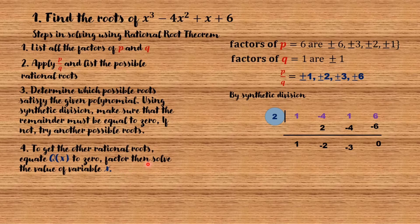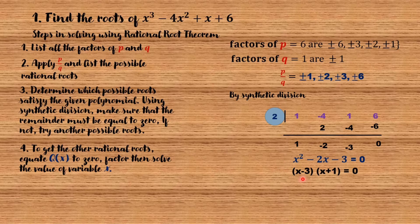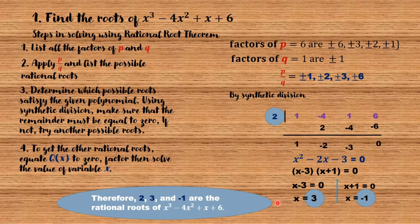To get the other rational roots, equate q of x to 0, factor, then solve for x. Our q of x is x squared minus 2x minus 3 equals 0. Factoring this trinomial gives us x minus 3 times x plus 1. Setting each factor equal to 0: x minus 3 equals 0 gives x equals 3, and x plus 1 equals 0 gives x equals negative 1. Therefore, 2, 3, and negative 1 are the rational roots of x cubed minus 4x squared plus x plus 6.